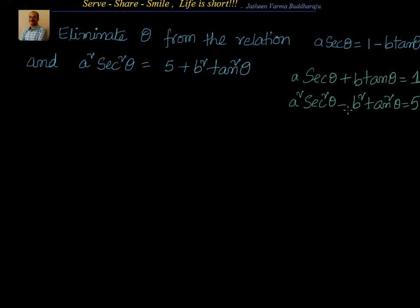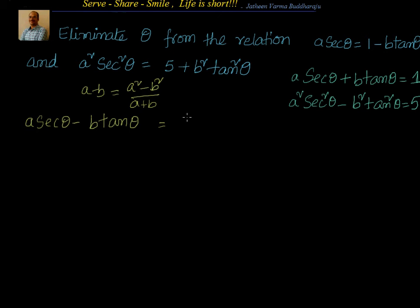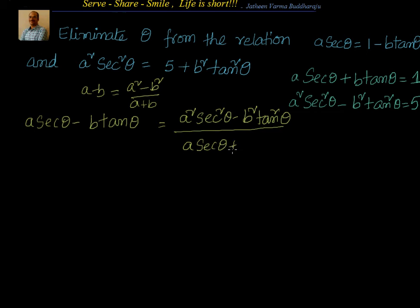We know that a minus b equals a square minus b square divided by a plus b. So a secant theta minus b tan theta equals a square secant square theta minus b square tan square theta, divided by a secant theta plus b tan theta. That gives us 5 divided by 1, which equals 5. So now we have two equations: a secant theta plus b tan theta equals 1, and a secant theta minus b tan theta equals 5.